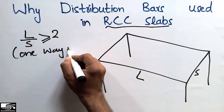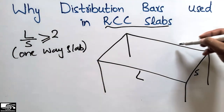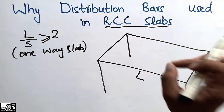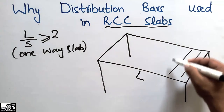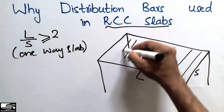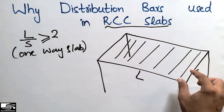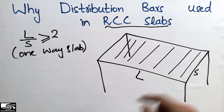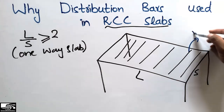In this type of slab, the bending moment is maximum along the shorter direction. So we place the main bars along the shorter direction, because more load is coming on the shorter direction compared to the longer direction. That is why we place the main bars along the short direction — these are called the main bars.